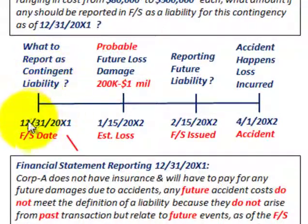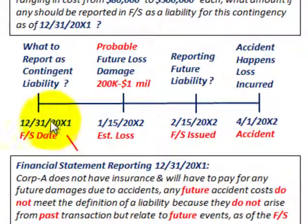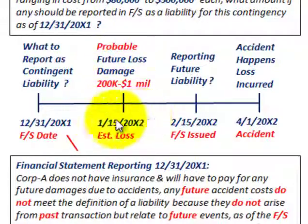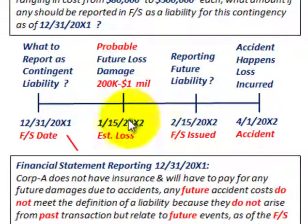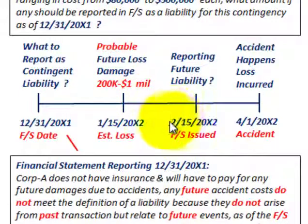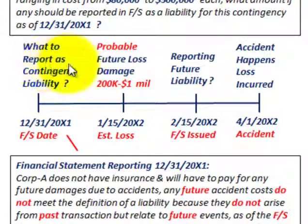Going back to the timeline: would we record anything on the financial statements at 12-31-20X1? We didn't have any losses during 20X1. Based on past experience, it's probable that a future loss or damage will happen in 20X2 — but should it be recorded or at least disclosed in the 20X1 financial statements? No. Because it's a future loss that didn't happen in the past, there would be no disclosure and no recording. Even though we determined this before actually issuing the financial statements, if something happens in the future and not in the past, you would not disclose or record it on your financial statements.